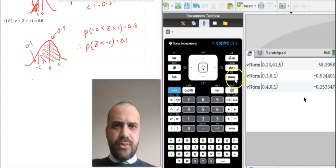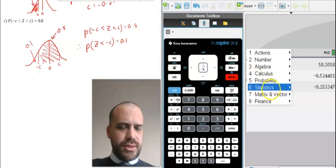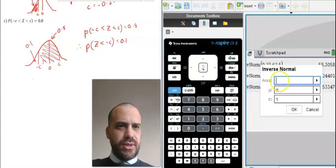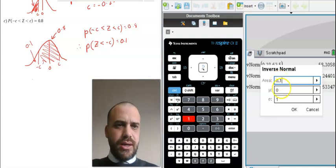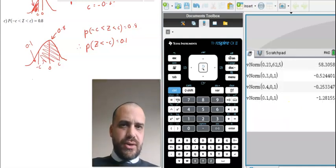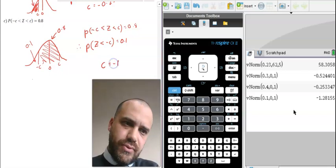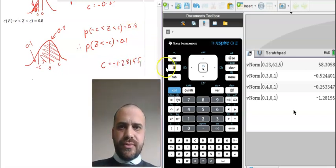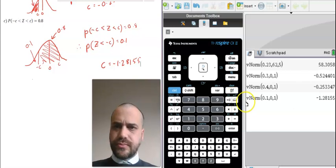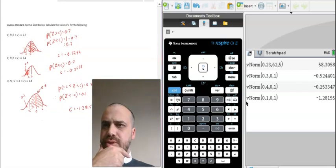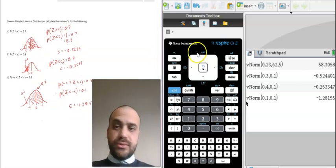So now we go over here menu stats distributions inverse normals and we have an area of 0.1 a mean of 0 a standard deviation of 1 and we get an answer of C equals negative 1.28155. That is inverse normals on your TI.